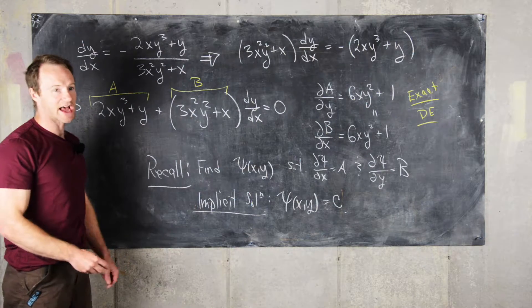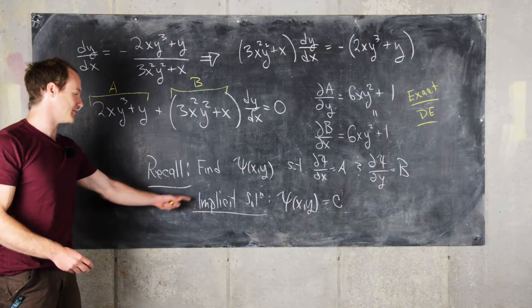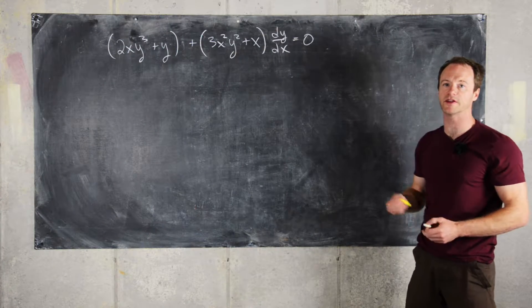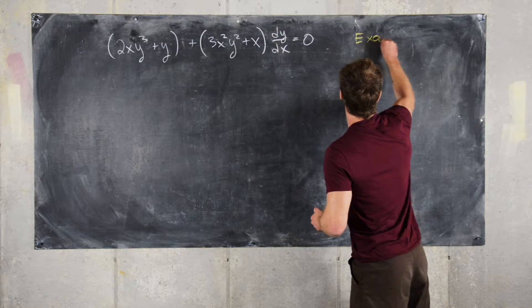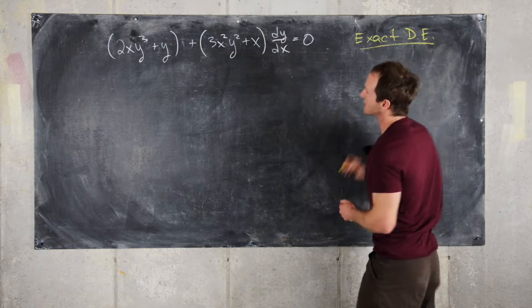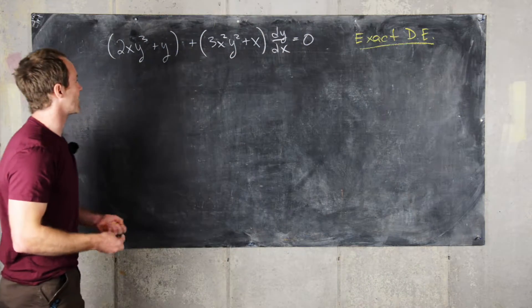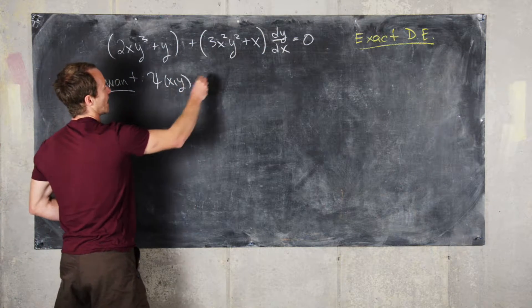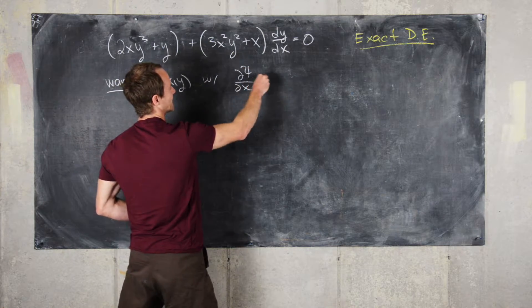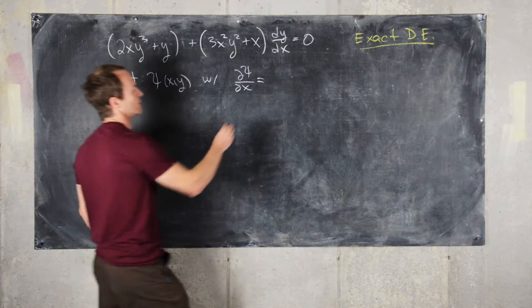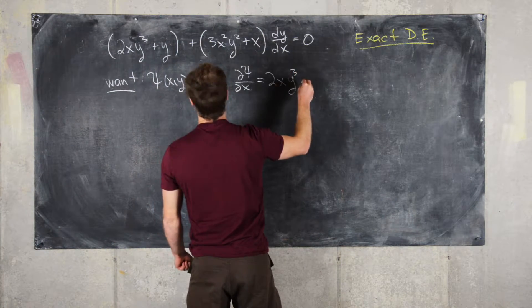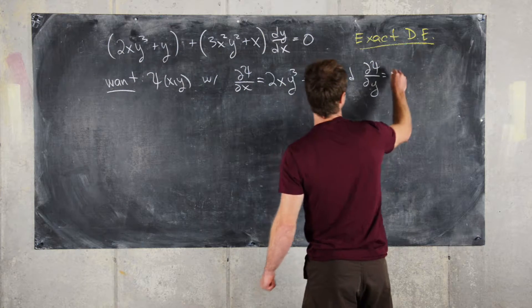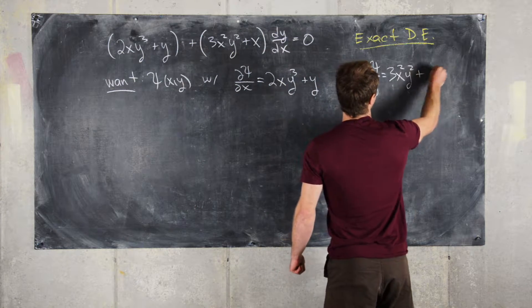Now that we know this is an exact differential equation and have a clear path to an implicit solution, let's construct it. We want psi(x, y) such that the partial of psi with respect to x equals 2xy³ plus y, and the partial of psi with respect to y equals 3x²y² plus x.